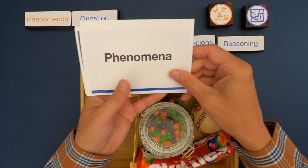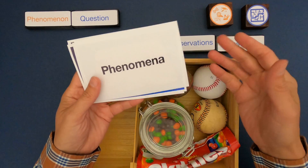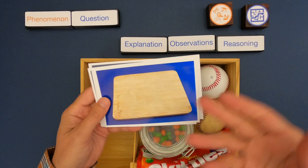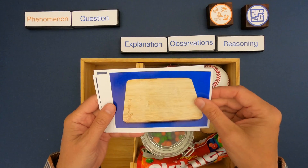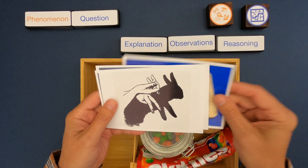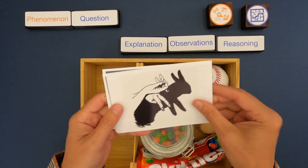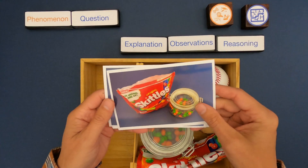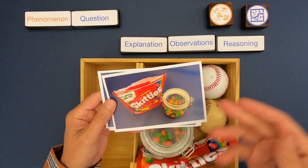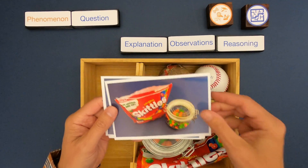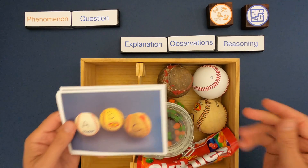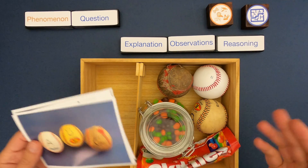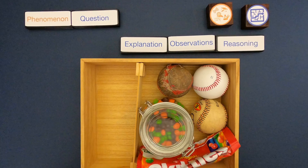After watching this video you should be able to construct explanations with evidence for phenomena like a cutting board and the cuts found on it, or how a shadow puppet works. I'm going to start by showing you my constructing explanations around this candy jar, and then you'll have a chance to do the same with these baseballs.